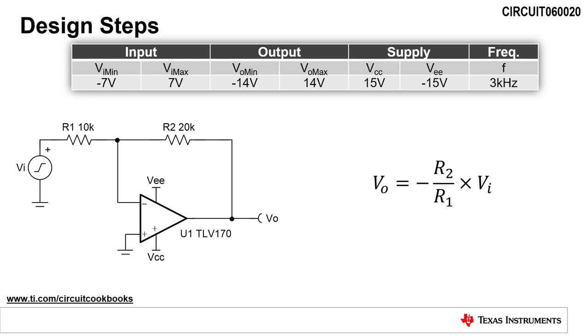The equation for VO is the transfer function of the circuit. VO is equal to VI multiplied by negative R2 divided by R1. The first design step is to calculate the magnitude of the gain, G. Since this is an inverting amplifier, the gain can be calculated by dividing the maximum output voltage, VO max, by the minimum input voltage, VI min. Using this equation, we can calculate the gain to be negative 2 volts per volt.